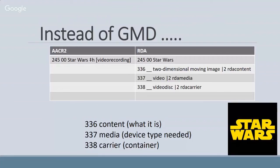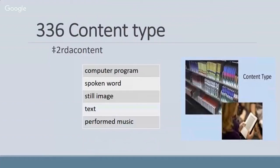These are the kinds of information you could see in a typical 336 field. It's going to tell us if the content is an image, a book, or a sound recording — is it an audio book or a musical performance? Personally, I think that change alone — being able to see that it's a spoken word versus a performed music CD — is very helpful for the user. It lets them know more about the content of a particular sound recording rather than just the word 'sound recording.'